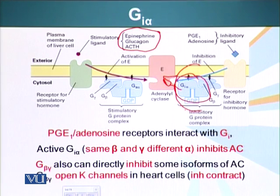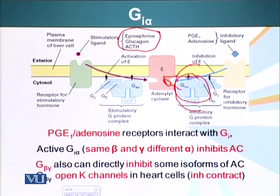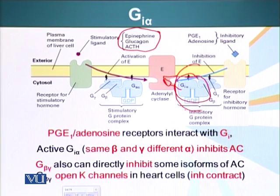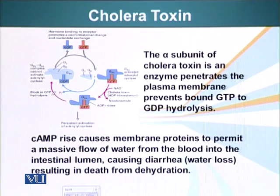Active GI proteins have the same beta and gamma subunits but different alpha subunits. It's worth mentioning that the beta and gamma subunits of G proteins — some isoforms — can also inhibit some isoforms of adenyl cyclase. Additionally, beta and gamma subunits can open calcium channels in heart cells and inhibit contraction.